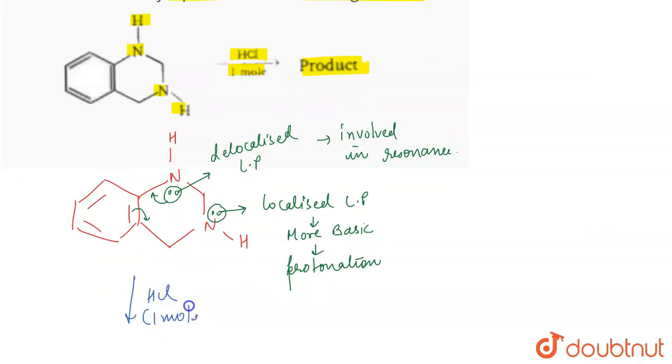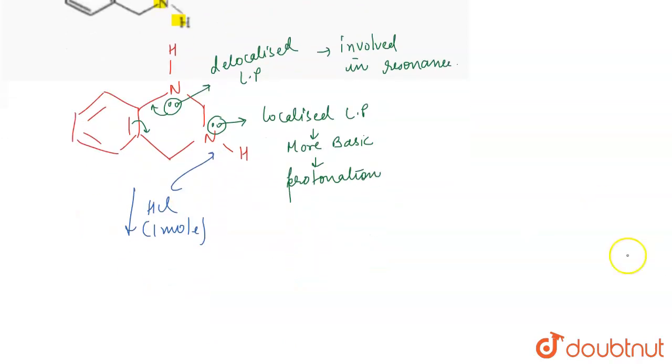So what is the product that we are going to obtain? The product obtained will be: now this will be NH, here we will be having NH2 plus, Cl negative. So this will be the product formed. So this is the correct answer for the question.